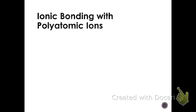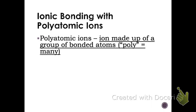Today we're going to talk about ionic bonding with polyatomic ions. A polyatomic ion is just an ion that's made up of a group of bonded atoms. The word poly means many. We make the AP kids memorize all these, but you have an ion chart on the back of your periodic table that tells you what all these are and what their names are.